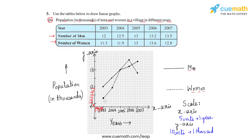Let us take the line representing the number of women first. This point marks the number of women in thousands in 2003, then 2004, 2005, 2006, and 2007. Similarly for men, this represents the number of men in 2003, 2004. The 2005 point is common for both men and women. This represents men in 2006, and this in 2007.